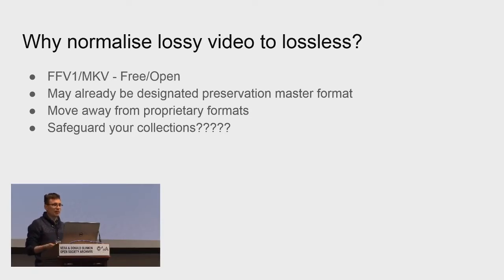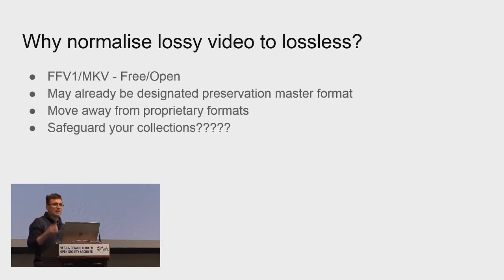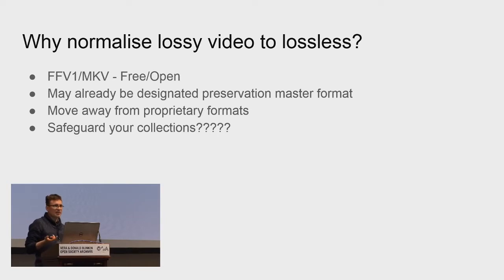So why would you want to normalize lossy video to lossless? It's quite uncontroversial to take uncompressed or lossless video and migrate it to a lossless format. Doing it with lossy is maybe a little bit more controversial. Perhaps FFV1 or JPEG 2000 might already be the designated preservation master format for a bunch of your files. At the IFI, for film scans we migrate our DPX to FFV1 and Matroska via Raw Cooked. Our uncompressed YUV tape migrations are also migrated to FFV1 and Matroska. So we thought, let's just at least investigate this.